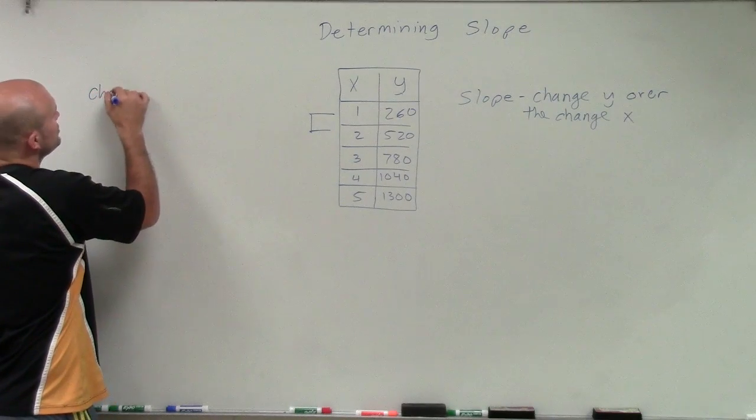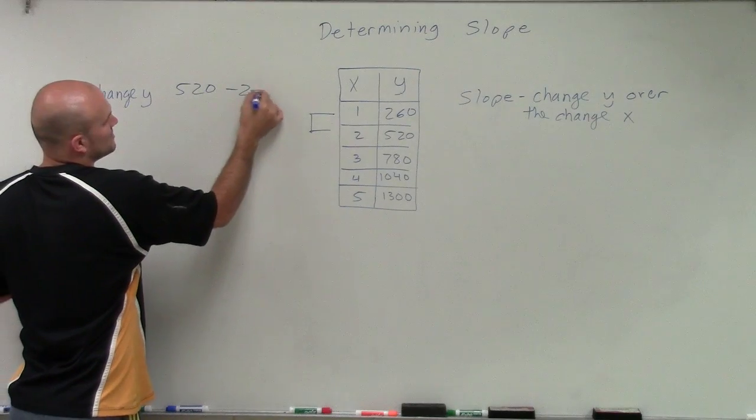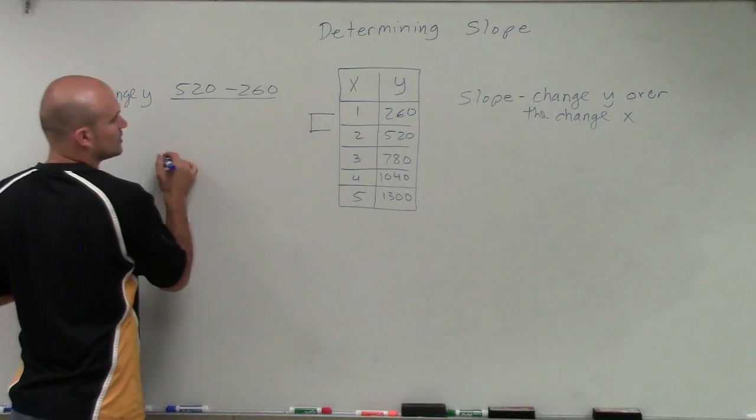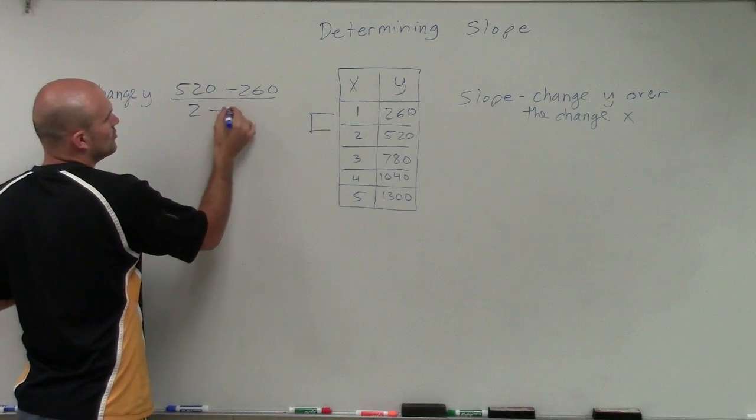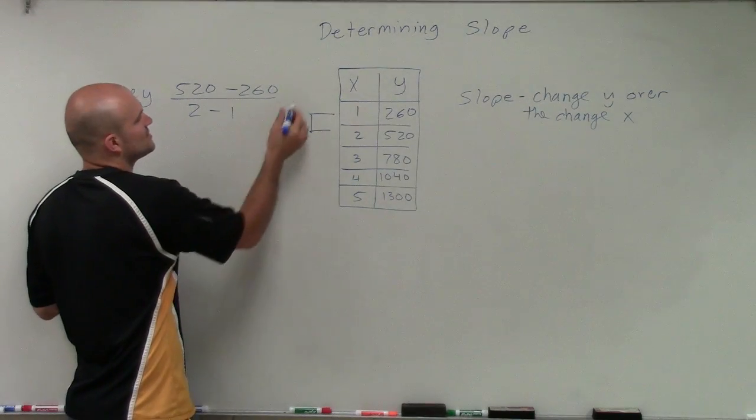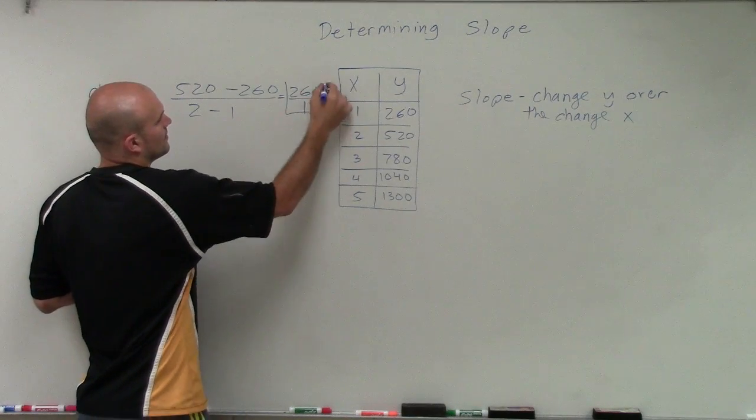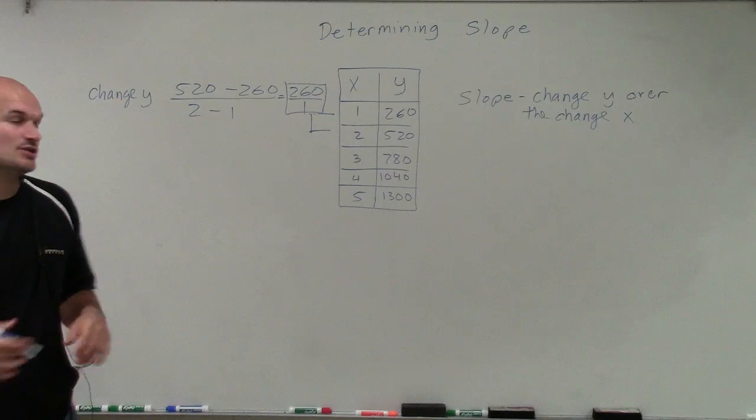So the change in y is going to be 520 minus 260 over the change in our x, which is going to be 2 minus 1. Well, you can see in this case, 520 minus 260 is 260 over 2 minus 1 is 1.